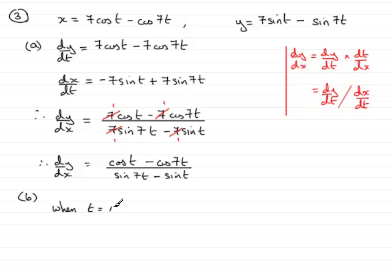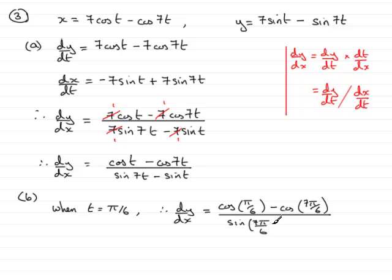In other words, I need to say that when t is π/6, I can find the gradient by substituting t equals π/6 into here to get dy/dx. So, therefore, we have dy/dx will equal cos of π/6, minus the cos of 7π/6, all divided by the sin of 7π/6, and if you get on a calculator and work that out, you should find that you get that it equals minus root 3.